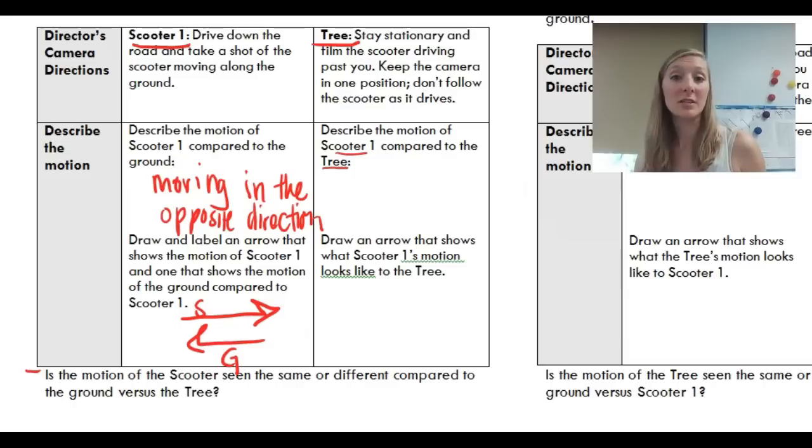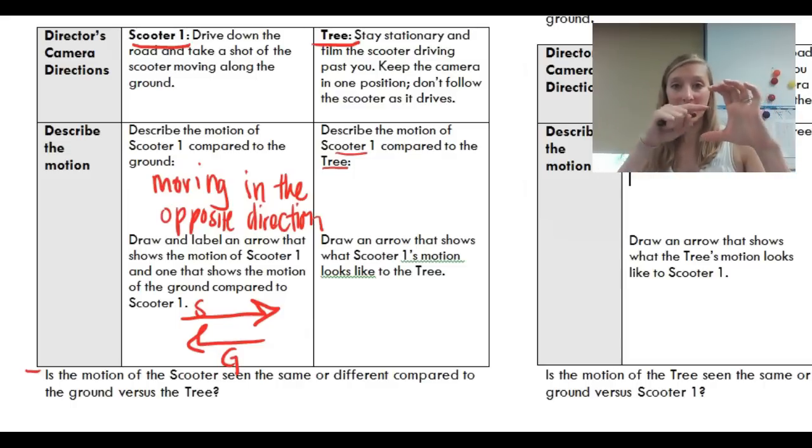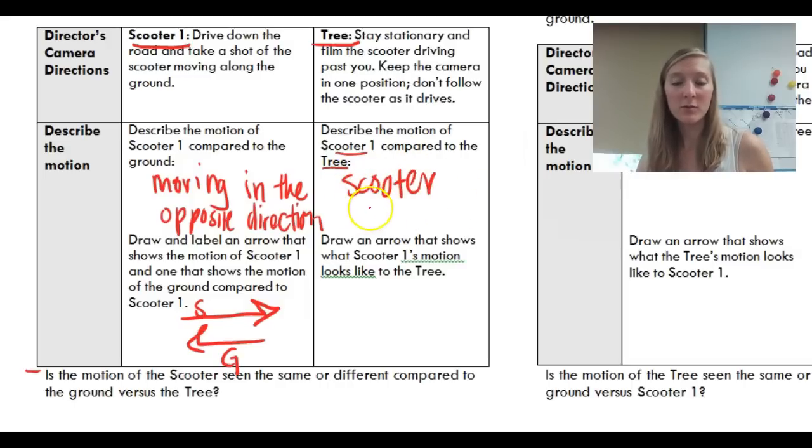So now let's look at the tree. So when you had the tree, you were taking video of the scooter moving across, so you could say that the scooter was moving based on your data. Scooter was moving.